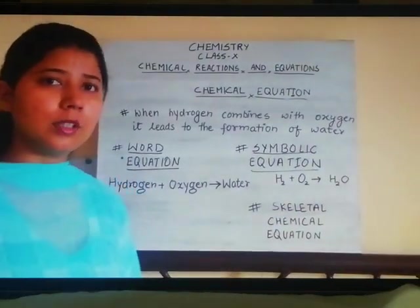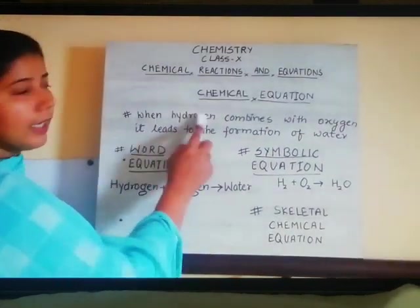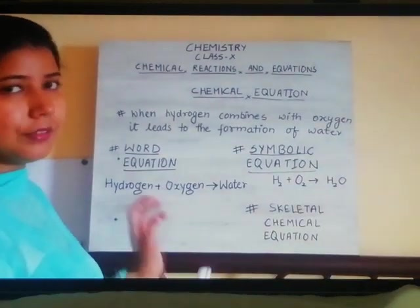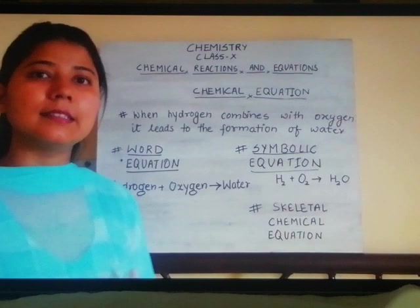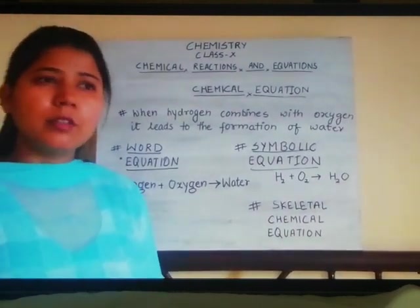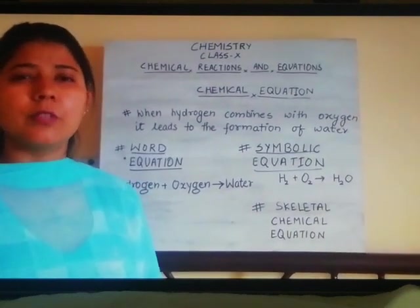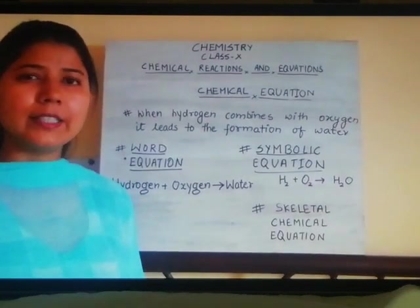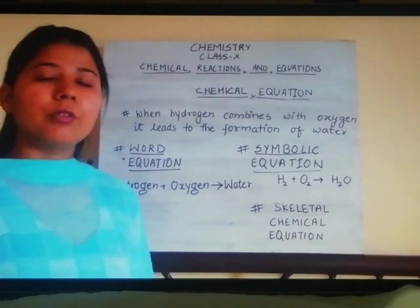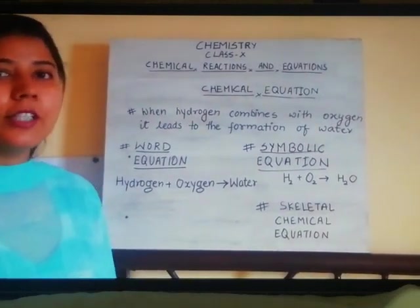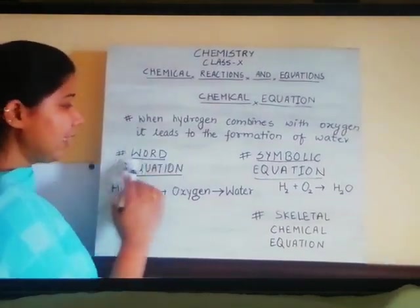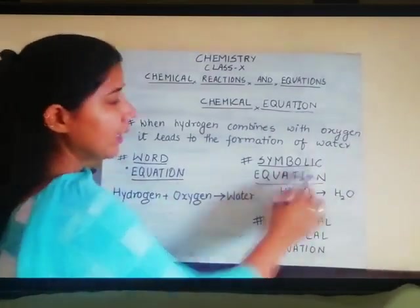Let's take an example - formation of water. How you are going to write it? When hydrogen combines with oxygen, it leads to the formation of water. But just think, it is taking very good time. In your exam, you have to write a lot of equations, a lot of chemical reactions. If you are going to write it in this form, it will hamper you. So for that, just to get rid of all these things, we are using some way to express a chemical equation in other forms. Two forms are there. One is with the help of word and the other with the help of symbol.